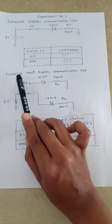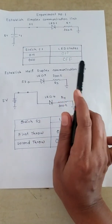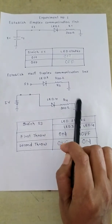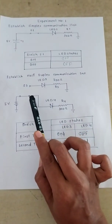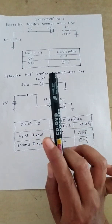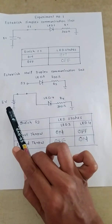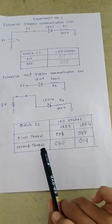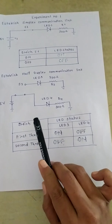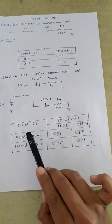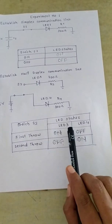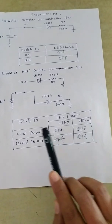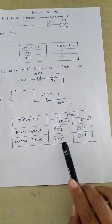Next, we will establish a half duplex communication link. This is the circuit diagram for the half duplex communication link. In this we are using two LEDs, one switch, two resistors, and for this circuit we are giving the five volt supply. Next is the observation table for the half duplex communication link. This is the switch position and next is the status of the LED. For the first throw we will see the status of the LED, and for the second throw we will see the status of the LED.